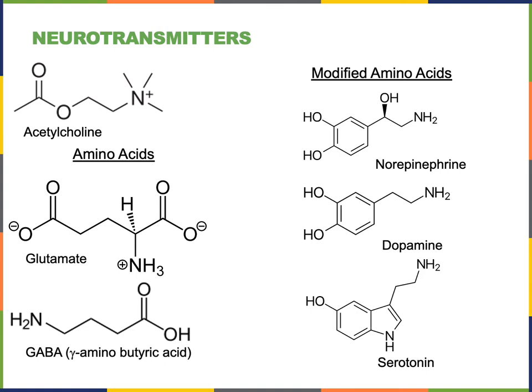GABA, or gamma-aminobutyric acid, is another neurotransmitter that is an amino acid or modified from an amino acid. GABA is the primary inhibitory neurotransmitter in the central nervous system, with a very large number of neurons that release it. GABA stimulates IPSPs in the postsynaptic cell.